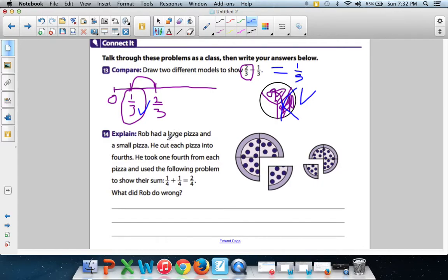Rob had a large pizza and a small pizza. He cut each pizza into fourths. I see that, do you see that, how he cut it into four different pieces? He took 1/4 from each pizza and used the following problem to show their sum: 1/4 + 1/4 = 2/4. What did Rob do wrong? Now the math isn't wrong. 1/4 + 1/4 is 2/4, so let's start with that. The math isn't wrong.